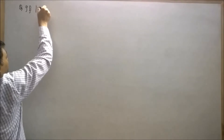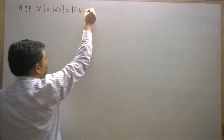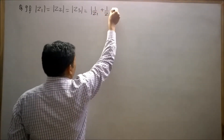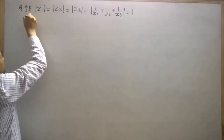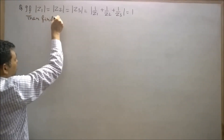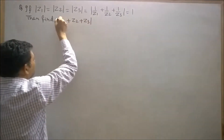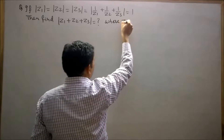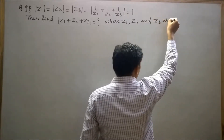The question says: if modulus of z1 equals modulus of z2 equals modulus of z3 equals modulus of (1/z1 + 1/z2 + 1/z3) equals 1, then find the modulus of z1 plus z2 plus z3, where z1, z2, and z3 are complex numbers.